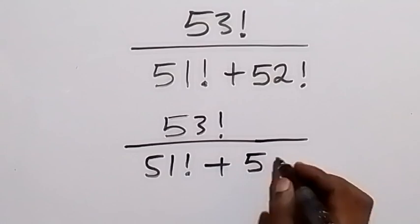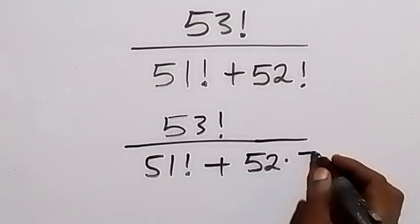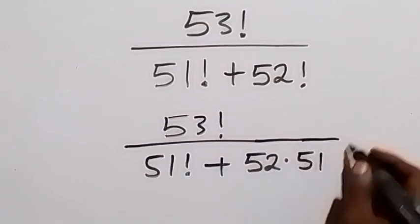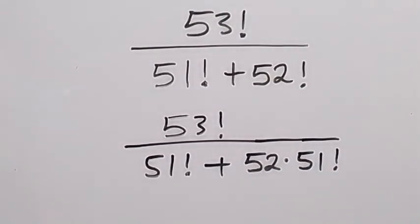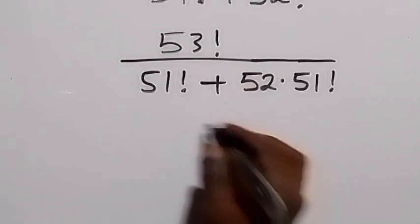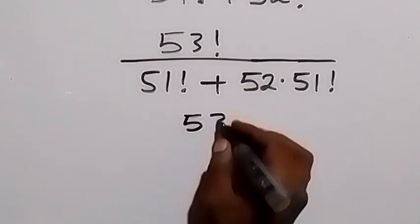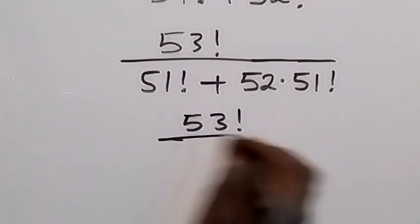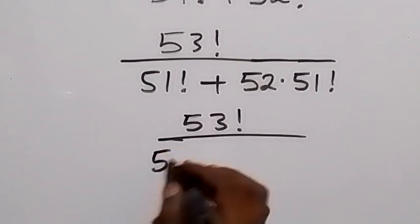52 factorial can be written as 52 times 51 factorial. From here we have 51 factorial common, so let's take it out. We have 53 factorial divided by 51 factorial.